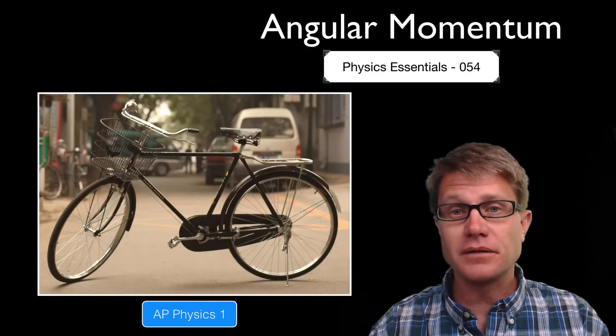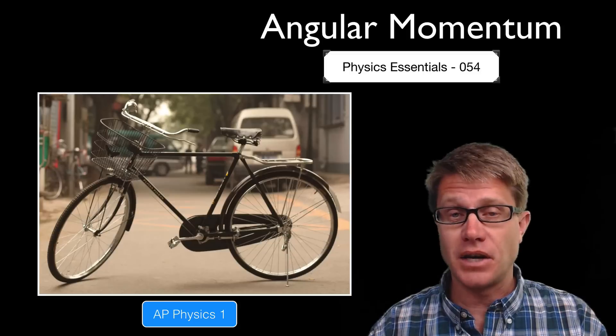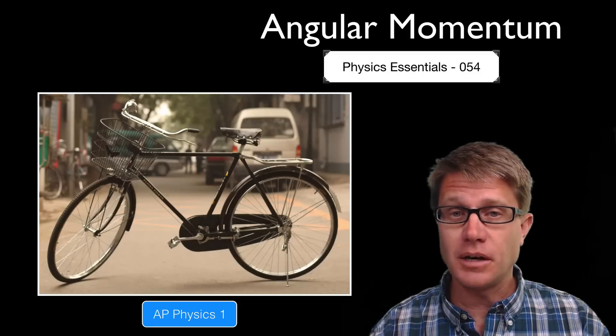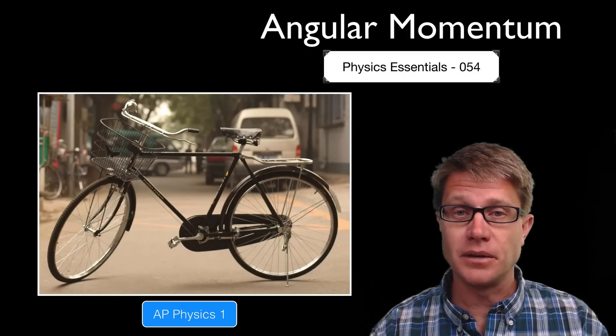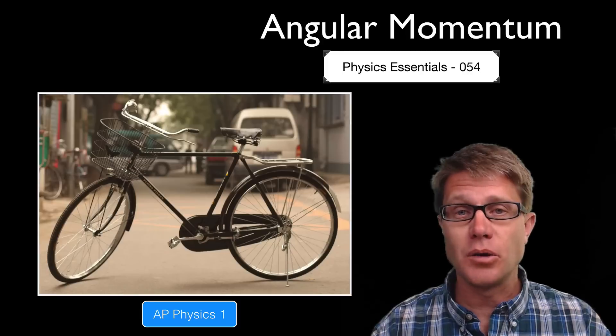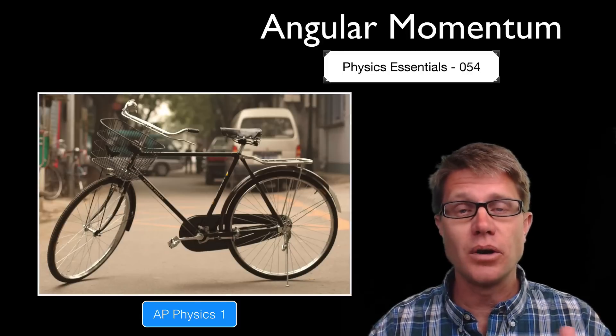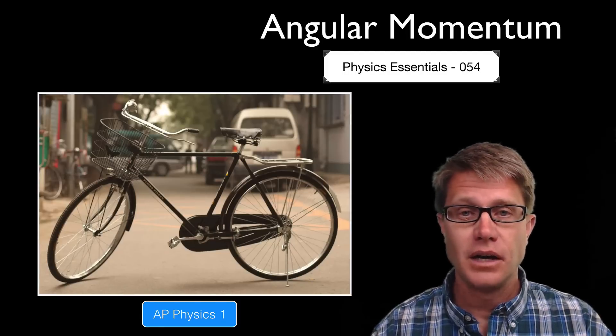Momentum, remember, is a product of the mass times the velocity of an object. So any object moving with mass has momentum. The only difference in angular momentum is it applies to rotating or spinning objects.